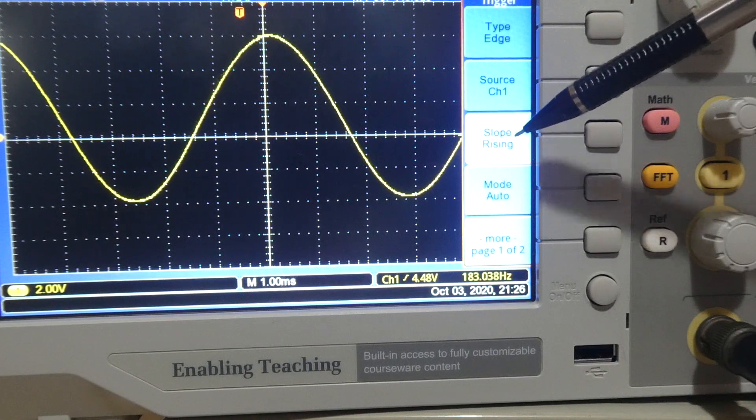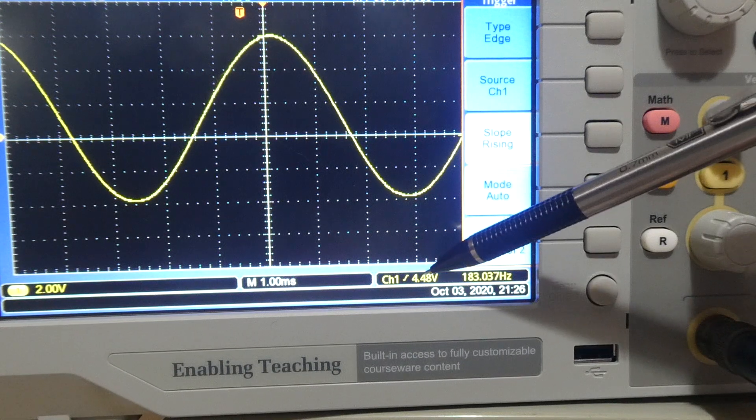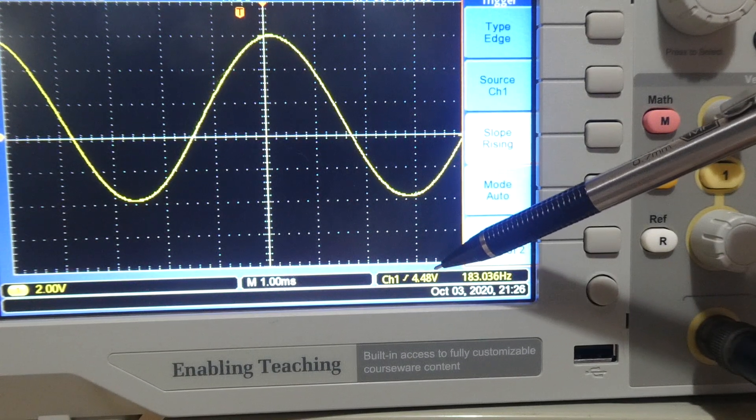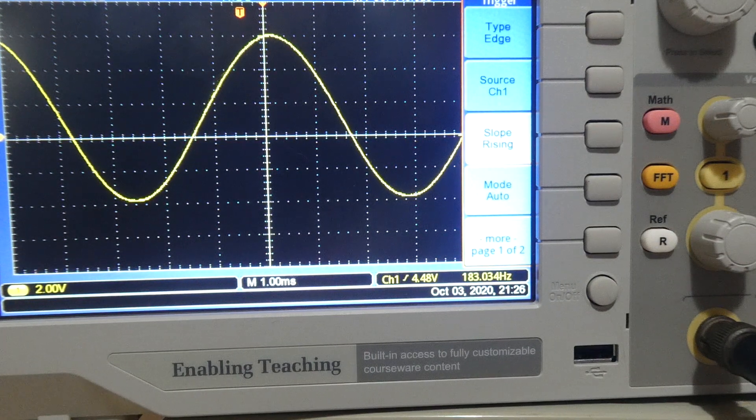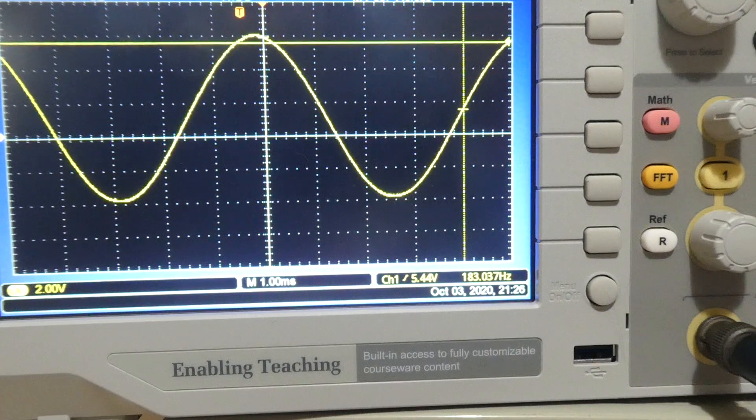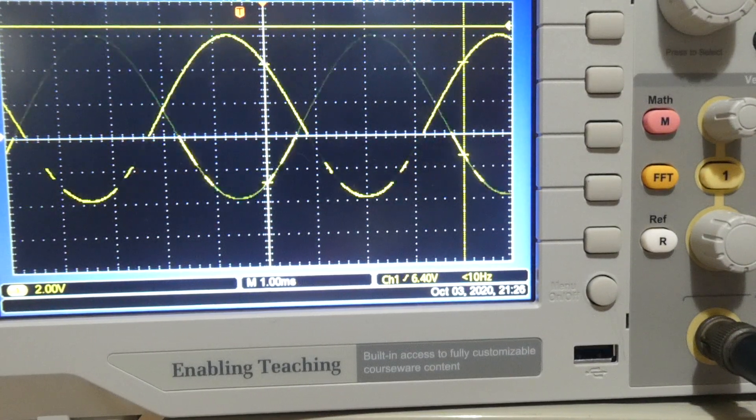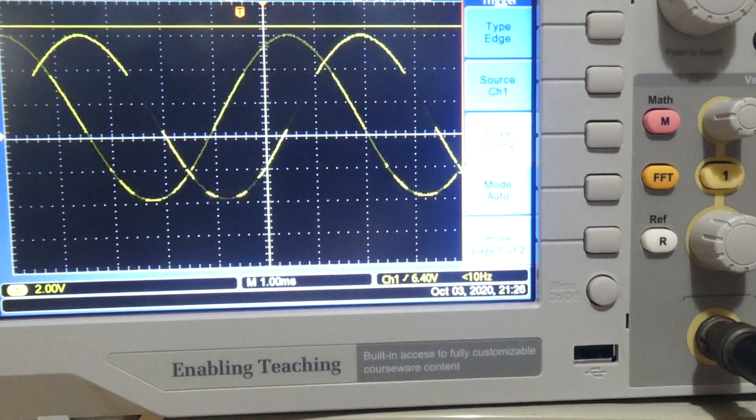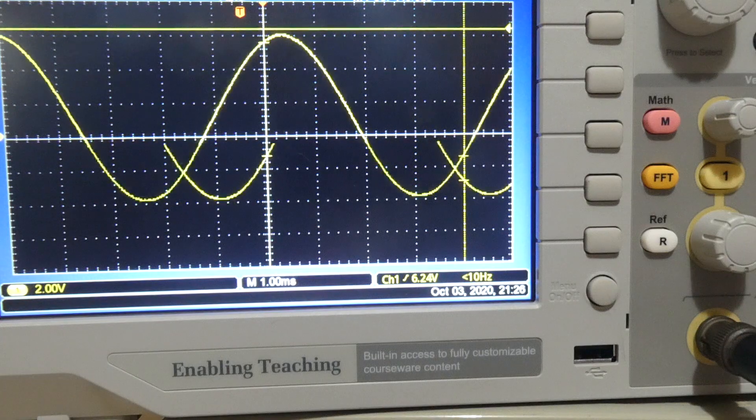We're on the rising slope, which is a forward slash for channel 1, and we're looking to trigger at 4.48 volts. I can move that voltage level so that we get to a point which is above the input voltage signal coming in, and the oscilloscope will lose its ability to identify a suitable trigger position and the picture is going to move all over the screen.